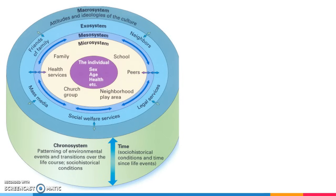The idea behind Bronfenbrenner's theory is that it's a bunch of layers. You start with the person in the middle and then from there we go to the more immediate context and then out to the bigger picture. So in the middle we have the individual — their age, their sex, do they have any special needs, anything like that.